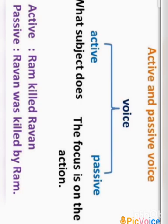As this image shows us, in active voice we are concentrating on what the subject does, whereas in passive voice we are concentrating on the action. For example, 'Ram killed Ravan' — here we concentrate on Ram. But in passive voice, 'Ravan was killed by Ram' — killed is more important. In passive voice we have auxiliary verb plus 'by'. Always remember that.